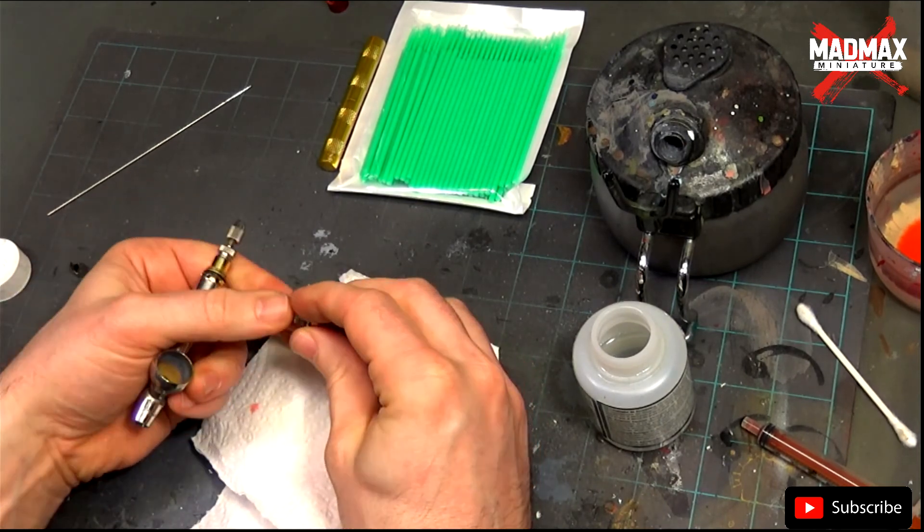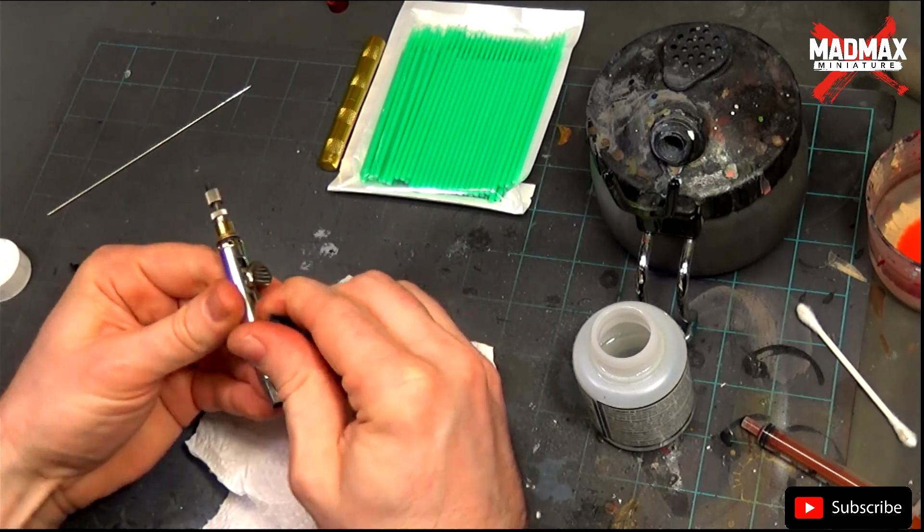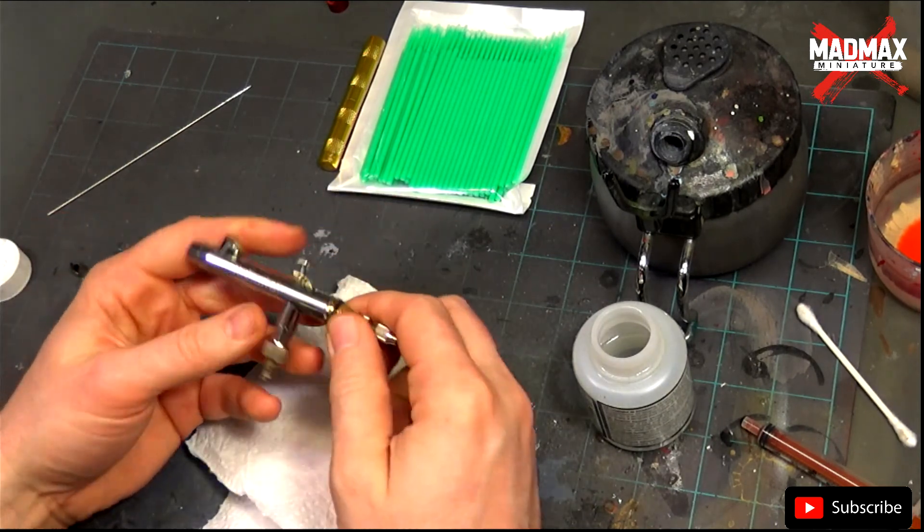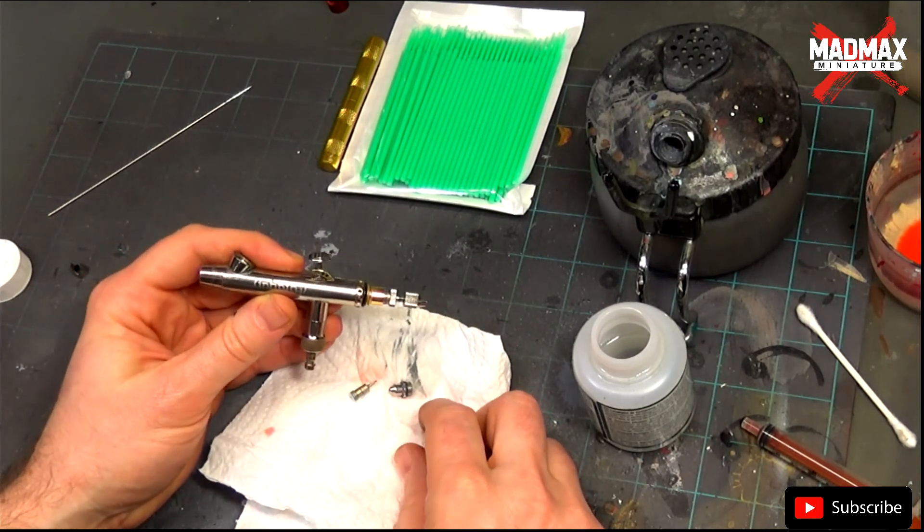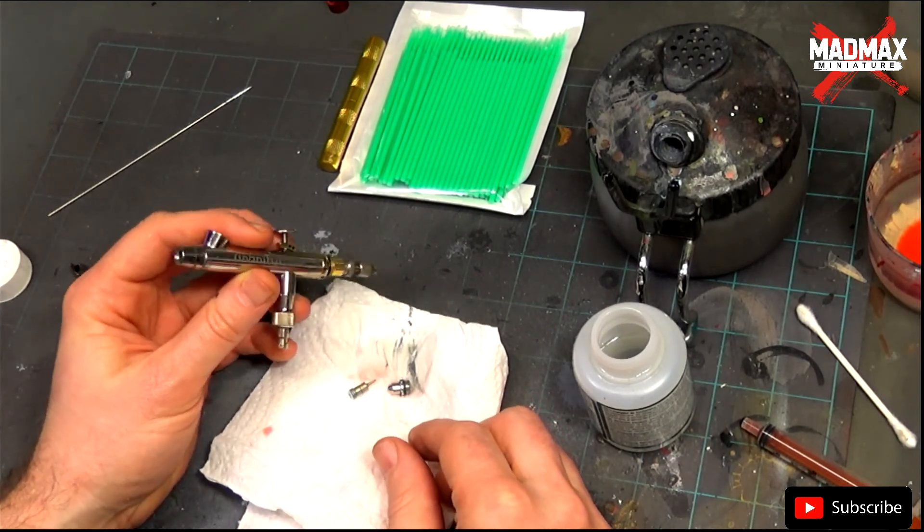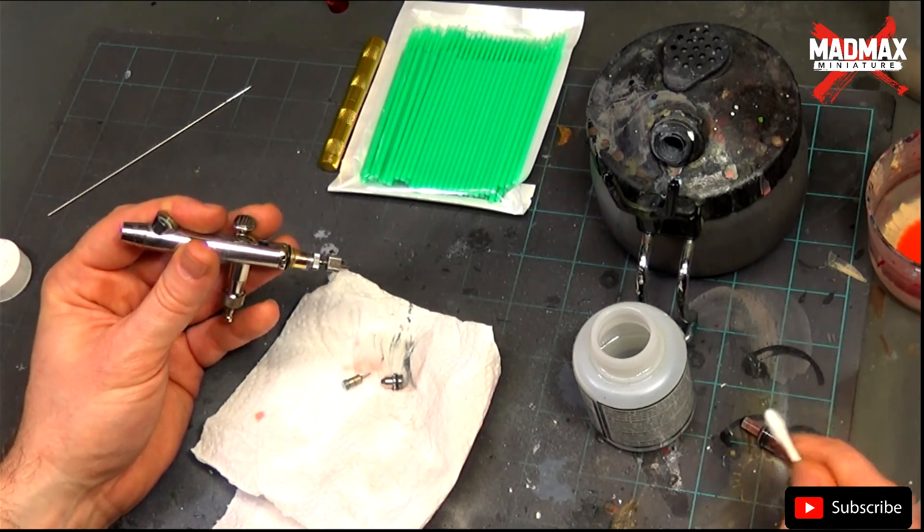Now it's time to clean the nozzle. This is the part that needs to be cleaned perfectly. Normally we don't have to take the airbrush fully apart as nothing is supposed to get dirty at the back of the airbrush if you do all the steps that I am showing you.